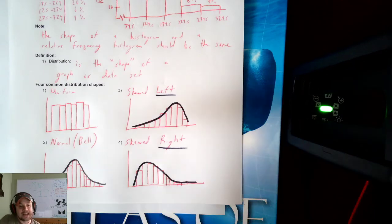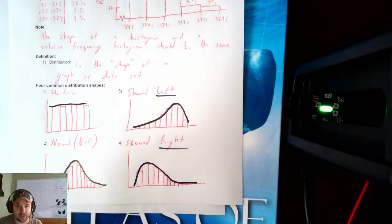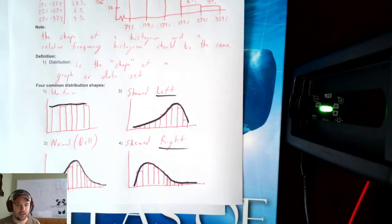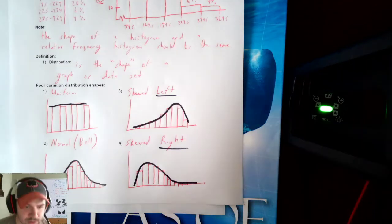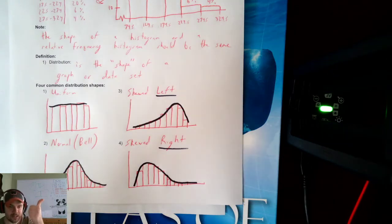And these are the four shapes. Let's put a line across the uniform one. We see it's generally a straight line across uniform. That's an example of each of the distributions: uniform, normal, skewed left, skewed right.